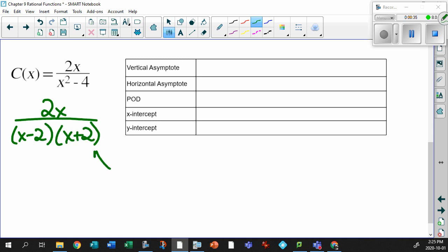So based on this, does this have non-permissible values? Of course. These non-permissible values, remember, is when x minus 2 cannot equal 0 and x plus 2 cannot equal 0. And then you solve it and you find the non-permissible values.